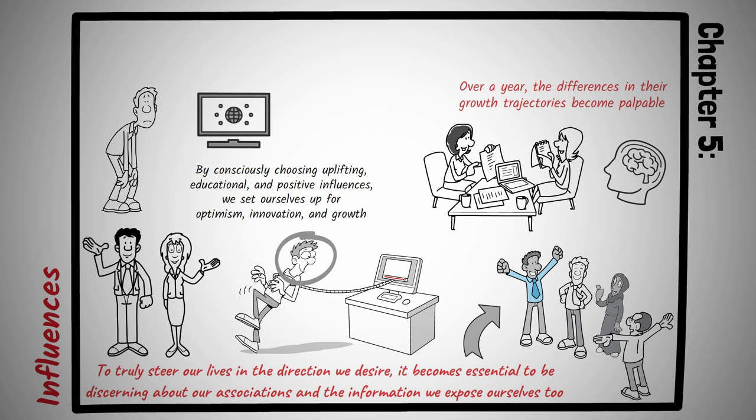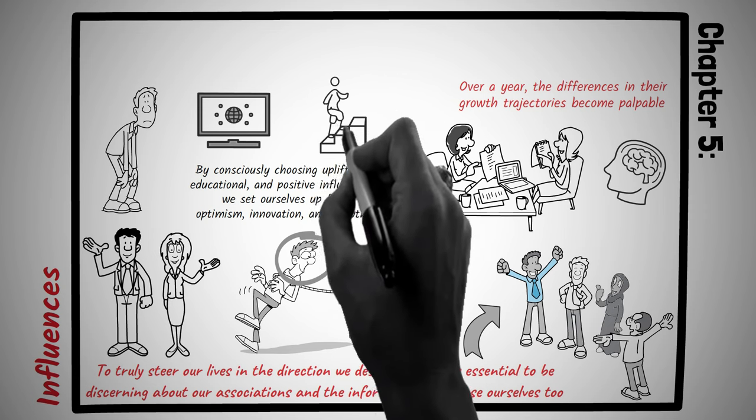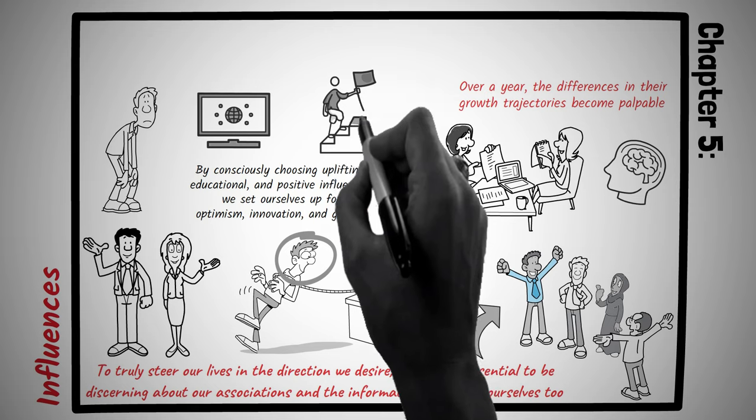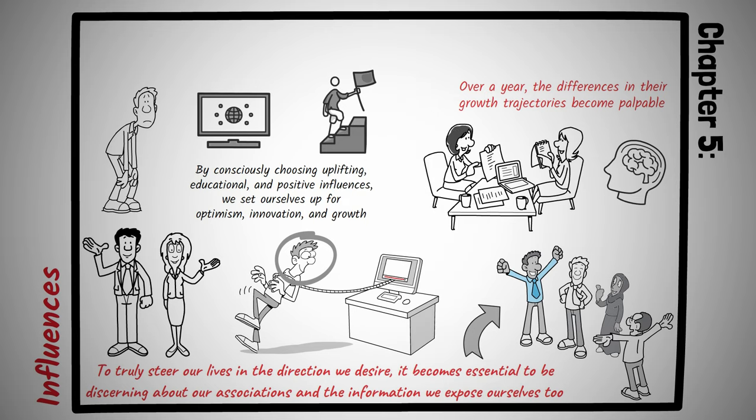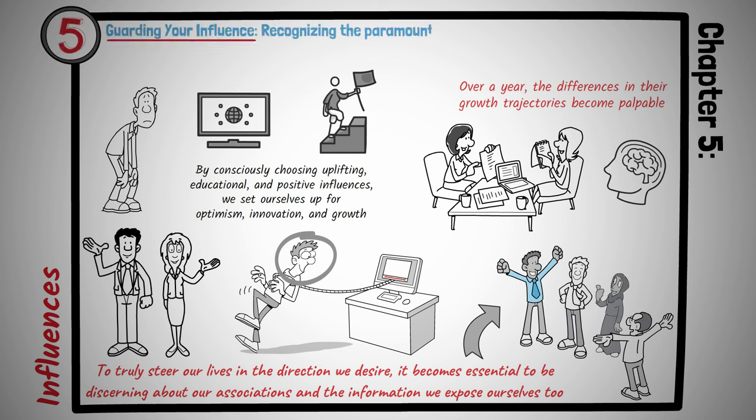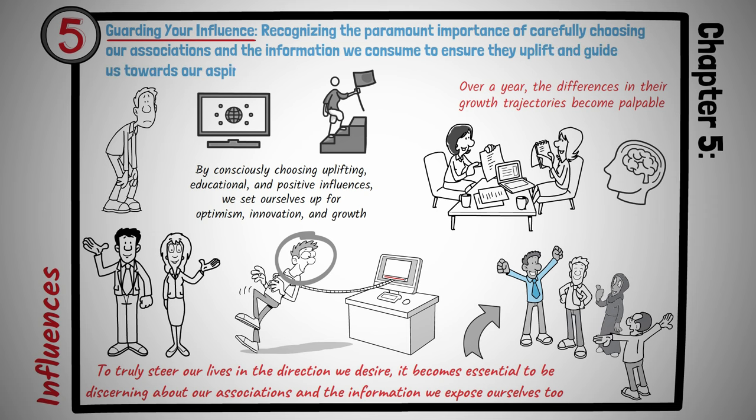To encapsulate, our journey towards our goals isn't navigated in isolation. The external influences, be they people or information, serve as winds that can either propel us forward, or push us off course. By being astutely selective about these influences, we can ensure our sails are always catching favorable winds. Principle number five is guarding your influence. Recognizing the paramount importance of carefully choosing our associations, and the information we consume, to ensure they uplift and guide us towards our aspirations.